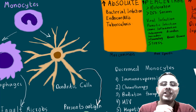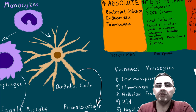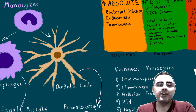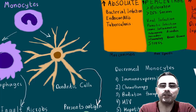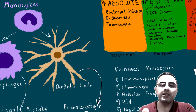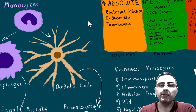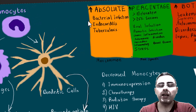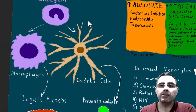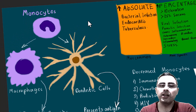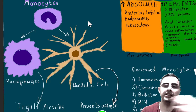Monocytes are one of the most important white blood cells or immune system cells. They are the first cells encountered when a pathogen comes. We will discuss what elevated monocyte levels mean, what an elevated monocyte percentage means, and when absolute monocyte levels are elevated or decreased in the blood.